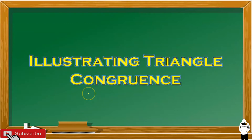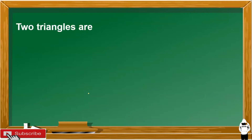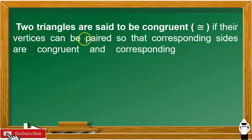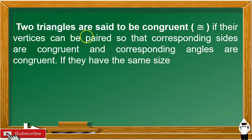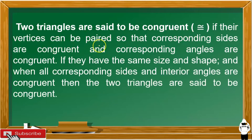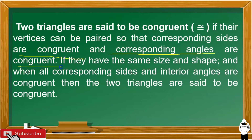This time, we are going to illustrate triangle congruence. Two triangles are said to be congruent if their vertices can be paired so that corresponding sides are congruent and corresponding angles are congruent.